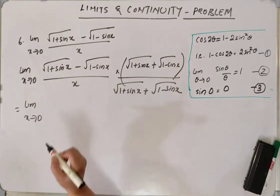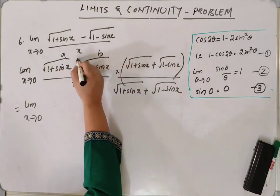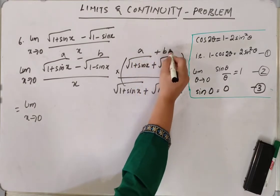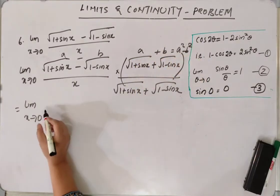Now this is of the form, if you take this as a and this is b, it's a minus b, a plus b, which is equal to a square minus b square. So let's use this.